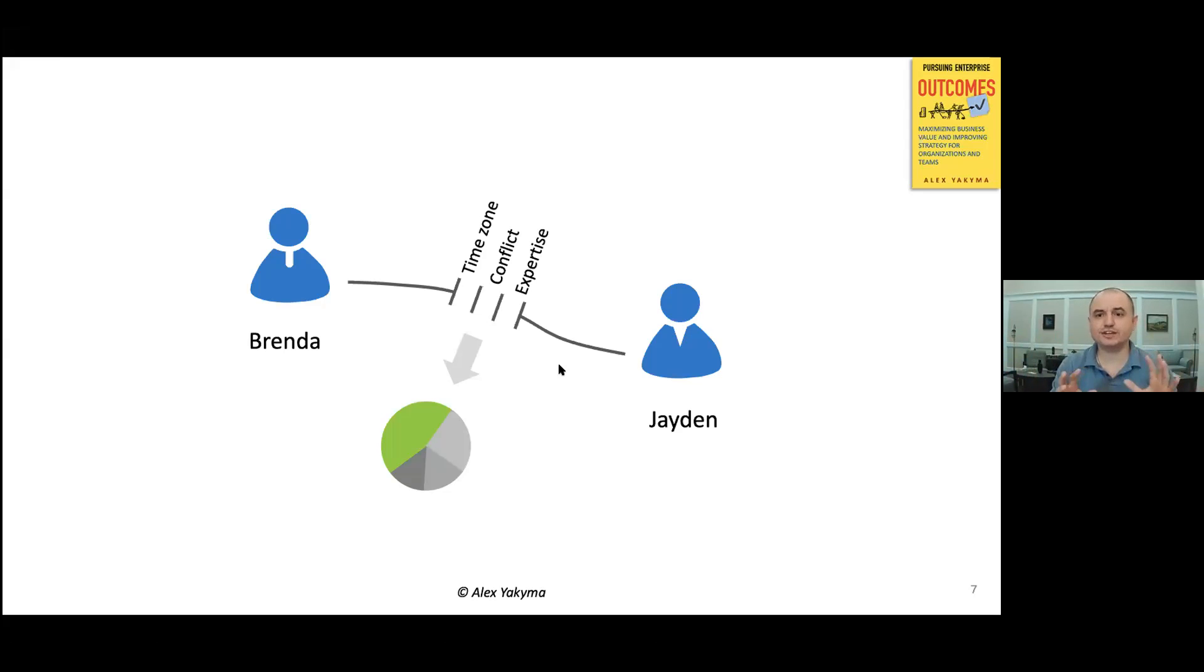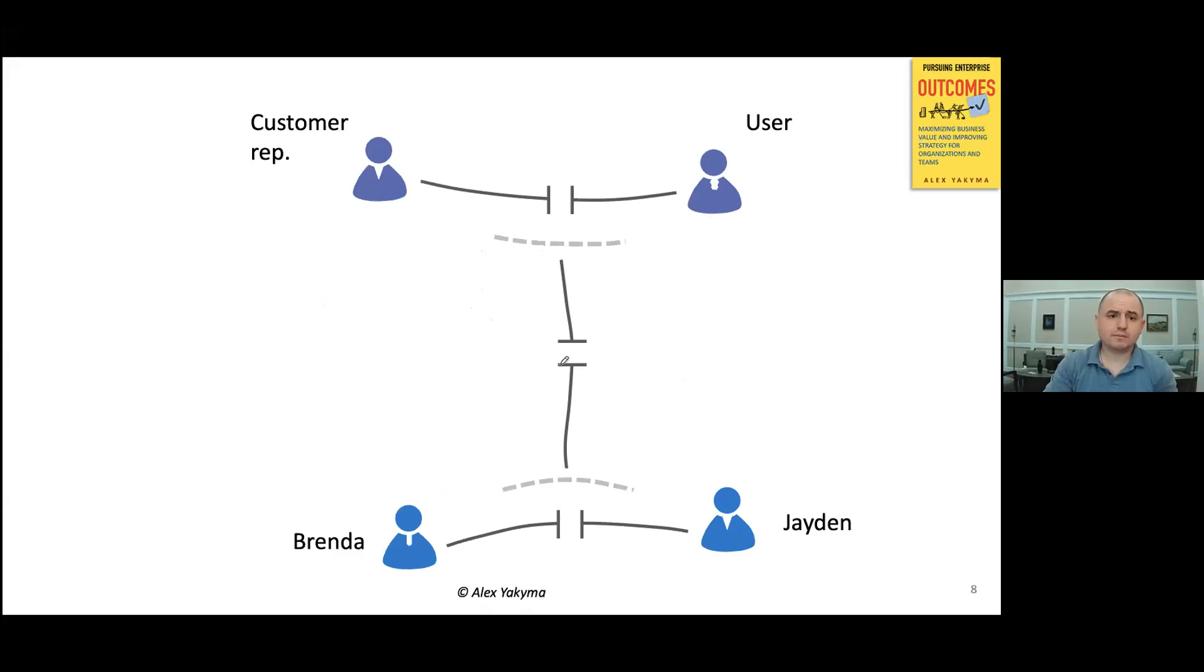But Brenda and Jaden are not alone in their ecosystem. There's more. There are other teams, there are other stakeholders, and maybe the ones that are the closest to them are the customer. The customer is not necessarily a simple thing. It's a group of people as well. So we're getting another picture where there's a customer domain this time, but the customer has the customer representative and the user, the end consumer of what they are creating.